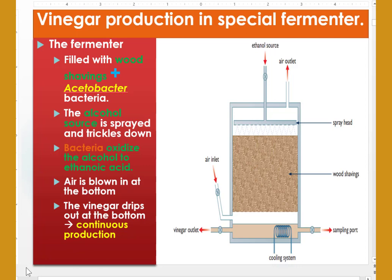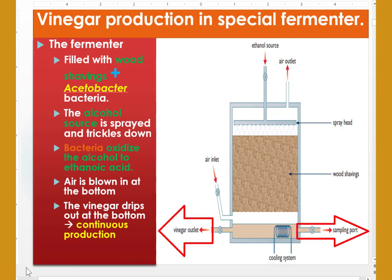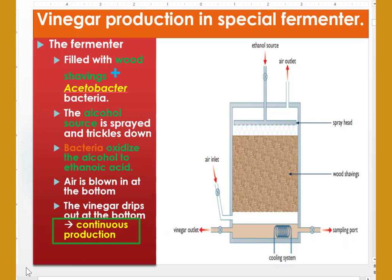This special fermenter is designed to let in air. Air is blown in at the bottom to supply oxygen to the bacteria. The vinegar then drips out at the bottom of the wood shavings and is tapped off. This type of production is called continuous production, as alcohol is continuously being fed in at the top and ethanoic acid is continuously dripping out at the bottom of the fermenter. This is technically how we can produce vinegar in special fermenters.